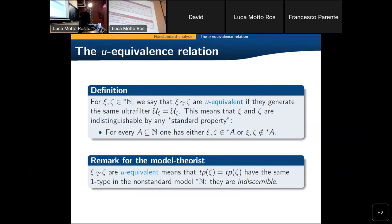One can introduce this notion of equivalence: we say that two elements are equivalent if they satisfy the same 1-type, meaning that they generate the same ultrafilter. So you cannot distinguish between these two elements for any subset — you take the nonstandard version of the subset, and both elements belong to star-A or both do not belong to star-A.